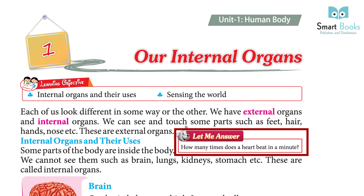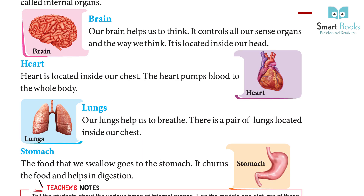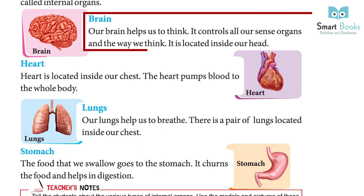How many times does a heart beat in a minute? Our brain helps us to think. It controls all our sense organs and the way we think. It is located inside our head.